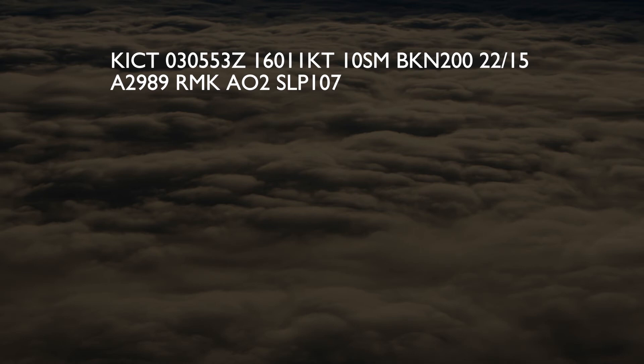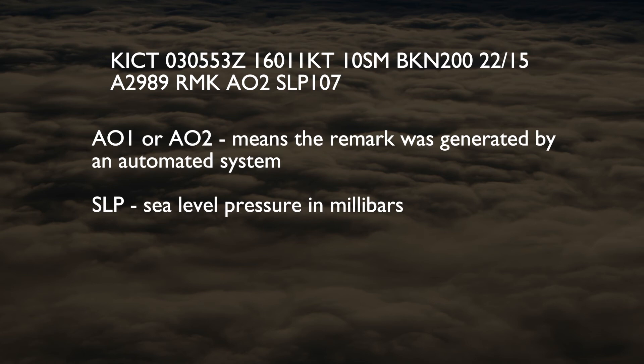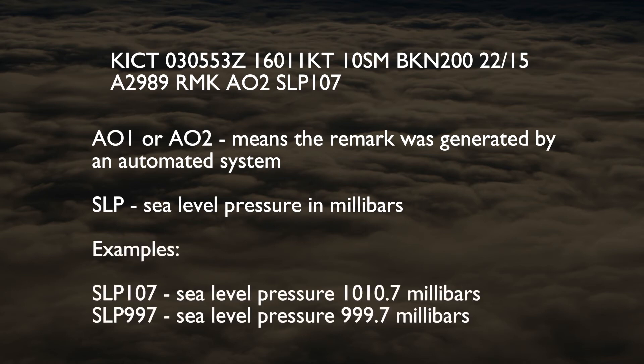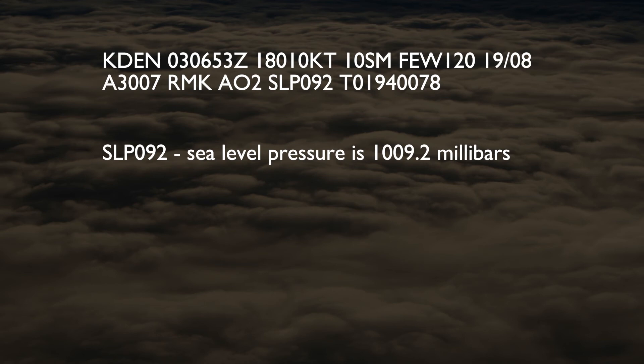METARs also often have remarks included, such as in this example report from Wichita. After the altimeter setting we are advised that a remark has been added. AO1 or AO2 means the remark was generated by an automated system. SLP is short for sea level pressure, reported in millibars. Since it is always fairly close to 1,000 millibars, the sea level pressure is shortened to the last three digits on the report. SLP107 means the sea level pressure was 1010.7 millibars, and SLP997 would indicate 999.7 millibars. In this example, a sea level pressure of 1009.2 millibars is reported in the remarks.